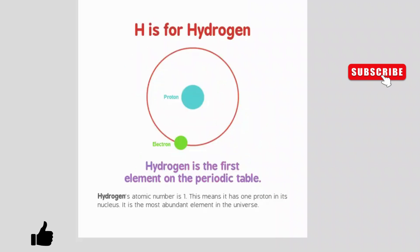H is for hydrogen. Hydrogen is the first element on the periodic table. Hydrogen's atomic number is one, which means it has one proton in its nucleus. It is the most abundant element in the universe.